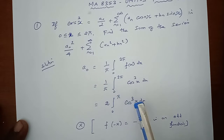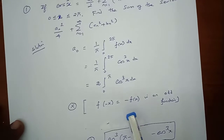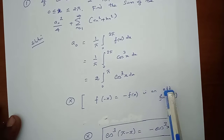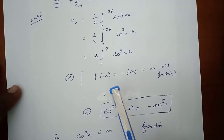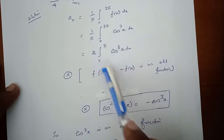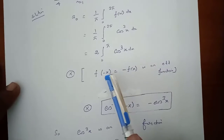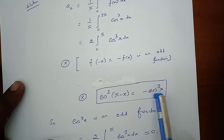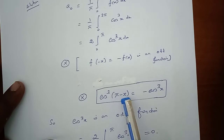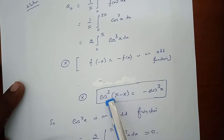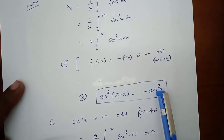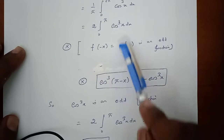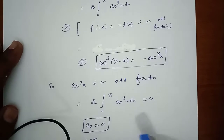This can be taken as 2 times the integral from 0 to π of cos³x dx. Check whether the function is even or odd. The definition of an odd function is f(−x) = −f(x). The function f(x) = cos³x: cos³(π − x) = −cos³x, so cos³x is an odd function. Therefore 2 times the integral from 0 to π of cos³x dx = 0, so a₀ = 0.